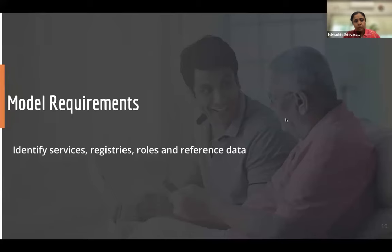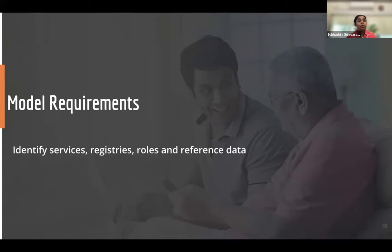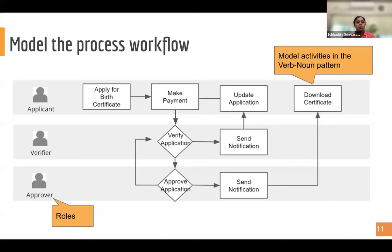Once you've got your requirements, the next step is to model your requirements. In DIGIT we have services, registries, roles, and reference data. From your requirements document, you need to figure out what needs to be a registry and what services you need to build. We at eGov follow a workflow-led design process. We create what are called swim lane diagrams or process workflow diagrams.